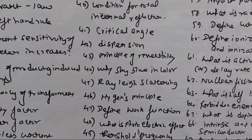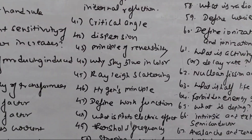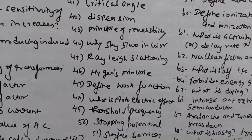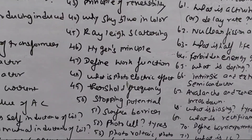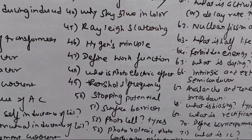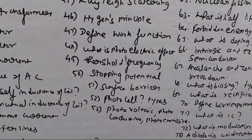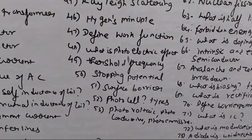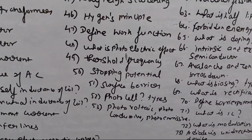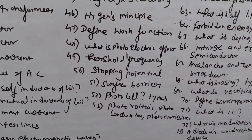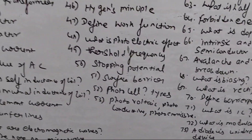Number 45 — Rayleigh's scattering law, reddish color. Define work function. What is photoelectric effect? Threshold frequency. Stopping potential. Surface barrier. Photo cell and types. Photovoltaic cell. Photoemissive cell — number 53.